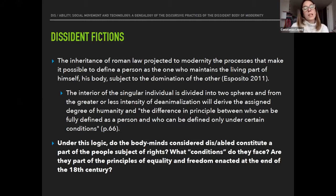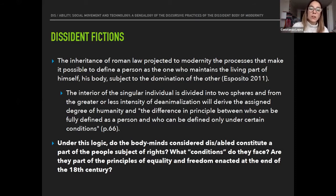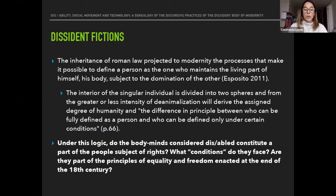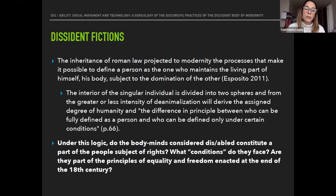The inheritance of Roman law projected to modernity processes that make it possible to define a person as the one who maintains the living part of themselves subject to the domination of another. The interior of the singular individual is divided into two spheres, and from the greater or lesser intensity of de-animalization derives the assigned degree of humanity: the difference in principle between who can be fully defined as a person and who can be defined only under certain conditions. I asked myself: do the body-minds considered disabled constitute a subject of rights? What conditions do they face? Are they part of the principles of equality and freedom enacted at the end of the 18th century?